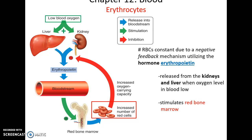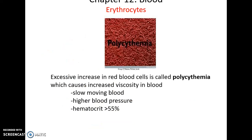Red blood cells are stimulated to be produced in the red bone marrow by the hormone erythropoietin. If there are low blood oxygen levels, the liver and kidneys will release erythropoietin into the bloodstream, which travels to the red bone marrow to increase the number of red blood cells being produced. This should then raise the blood oxygen level and stop the stimulus.